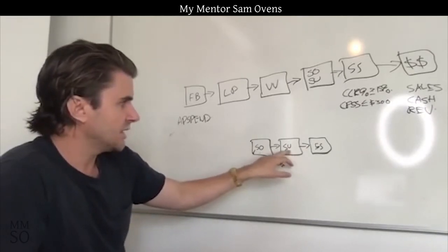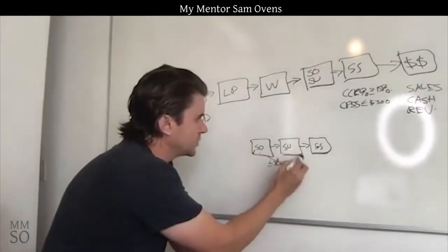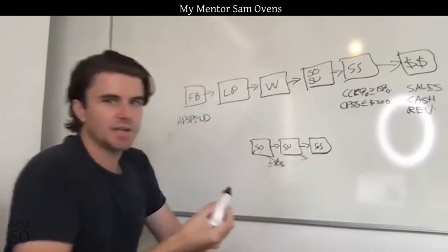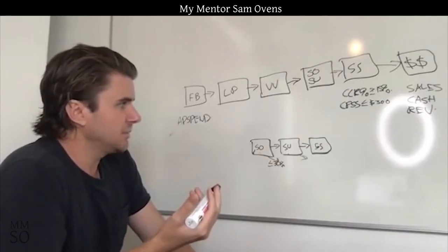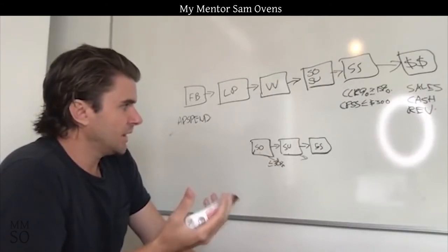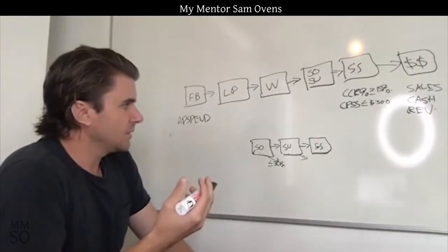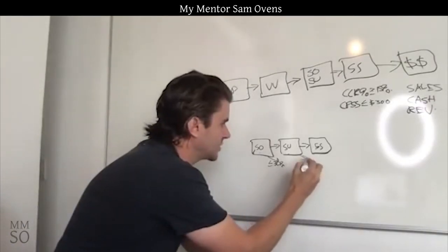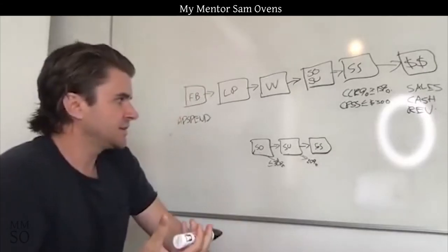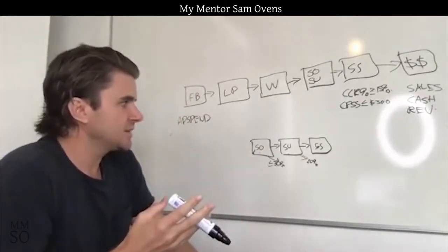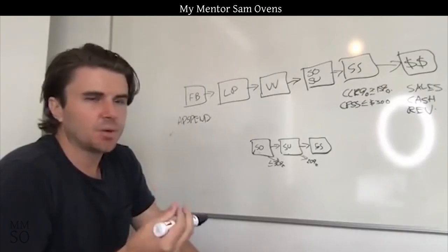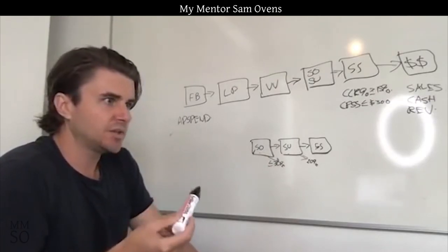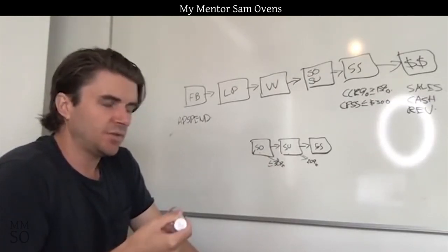There's another point where drop-off can happen — from survey to strategy session. Here you can have cancellations. You look at people's surveys and might cancel them because they don't look like a good fit. The cancellation rate should be around 20%. So if you get 10 surveys, you're probably going to cancel two. If you're cancelling more than 20%, you're being too strict or the traffic quality isn't right — you need to change the ads, audience, or disqualification in your video.